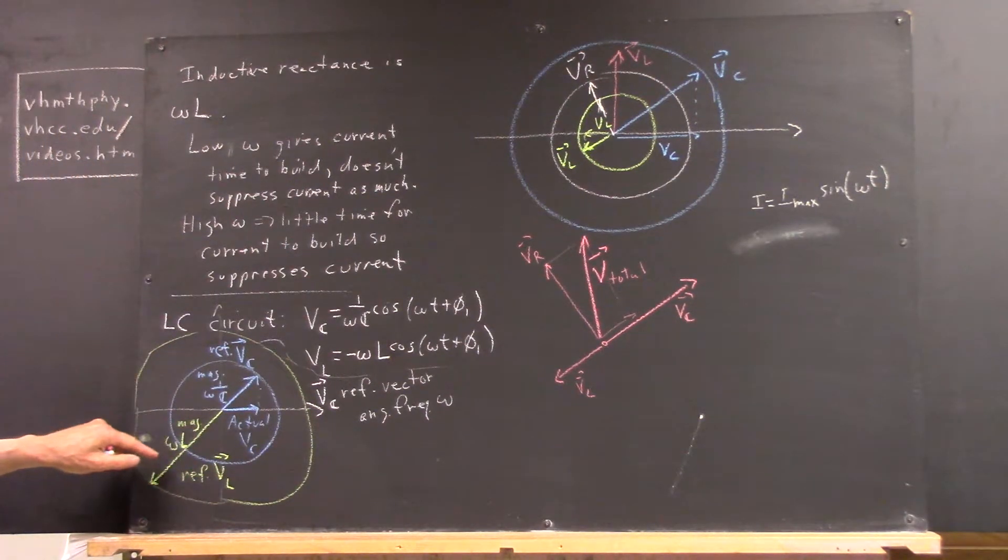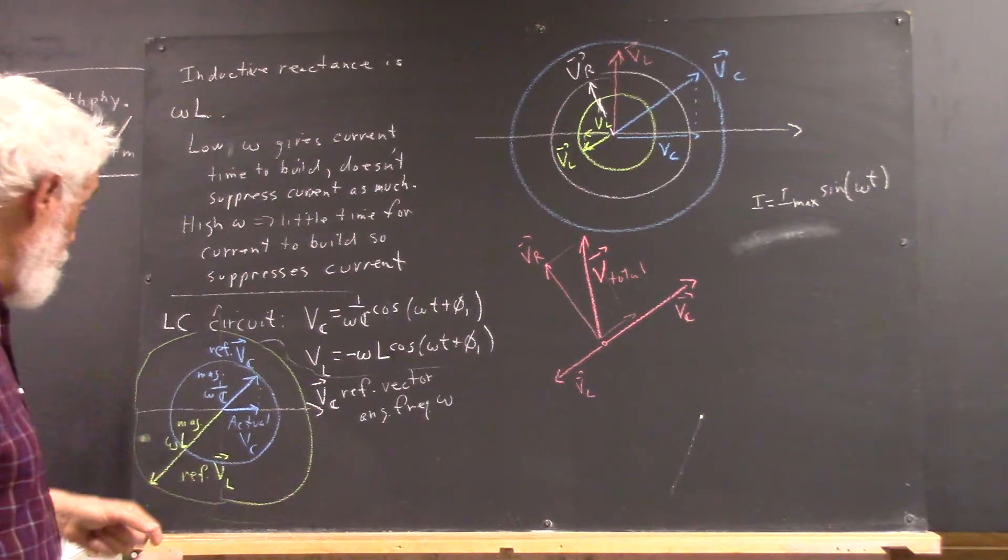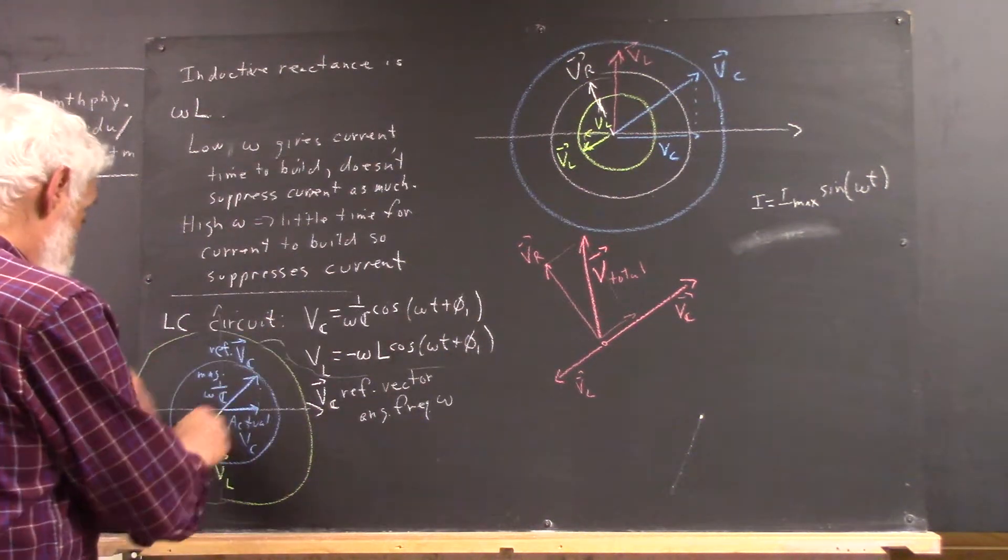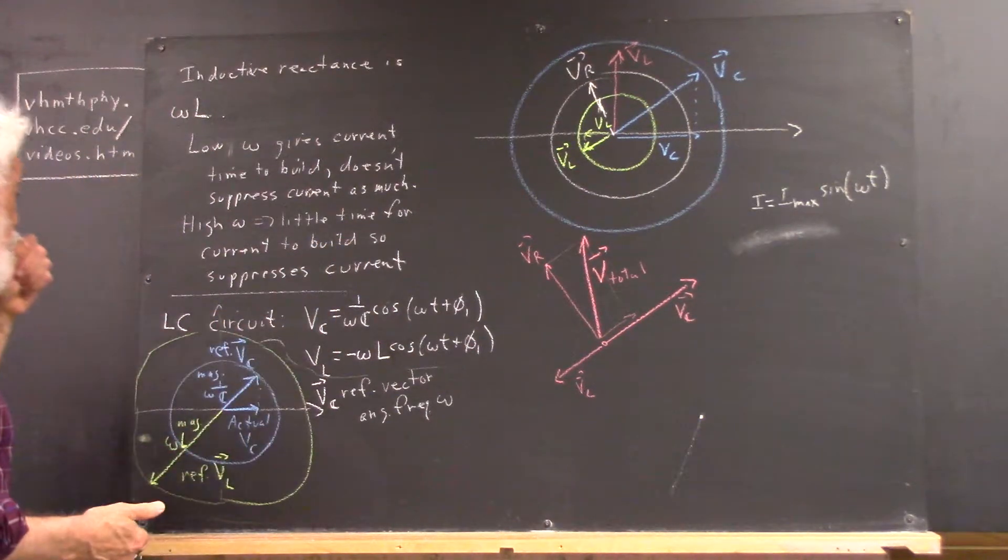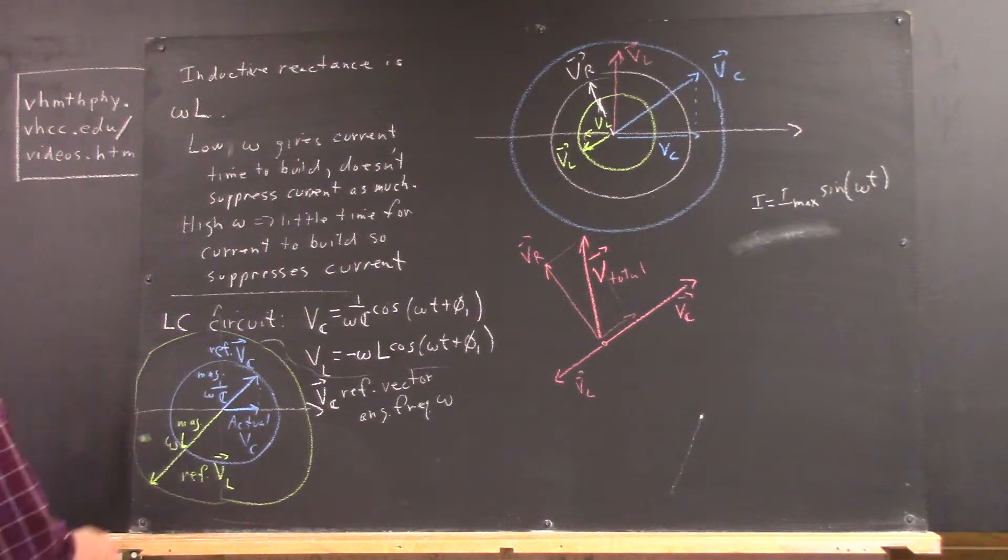1 over omega C and omega L could be anything at all. Now, this could be bigger than this. It could be much bigger. They could be equal and opposite. Any combination.